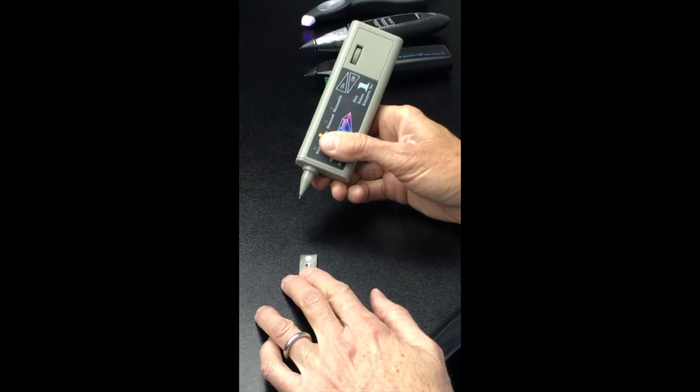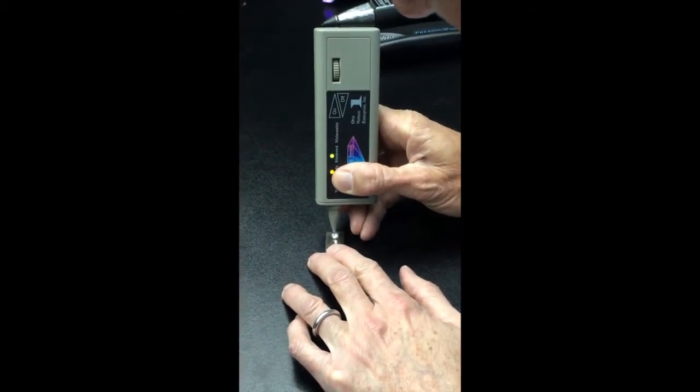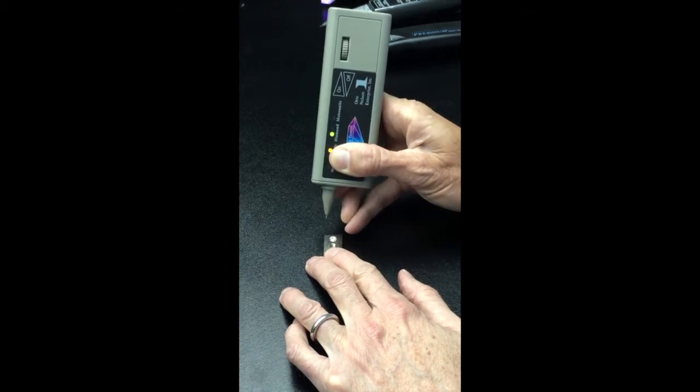Now this is the Oris Nelson diamondite. As you can see, it reacts as diamond.